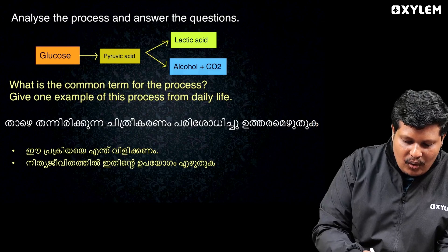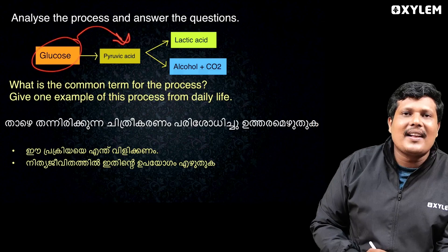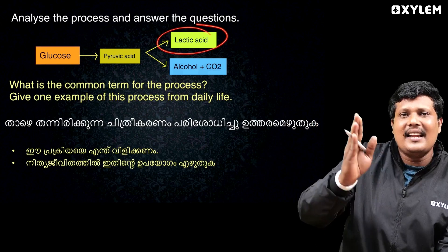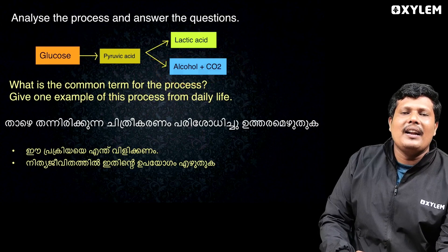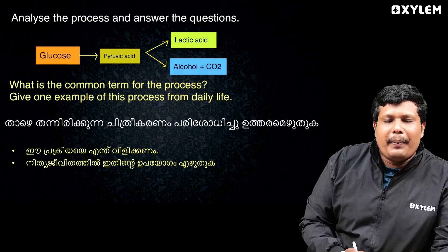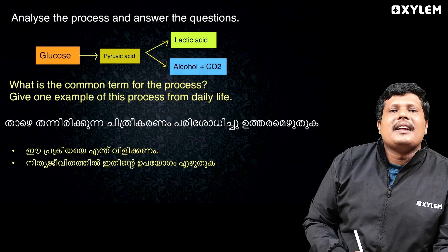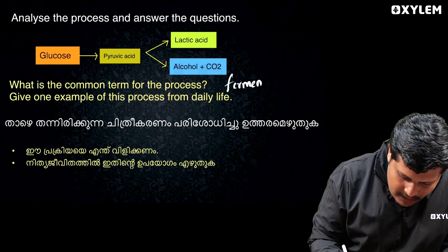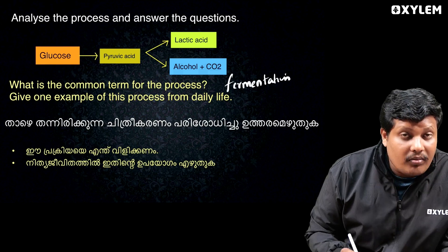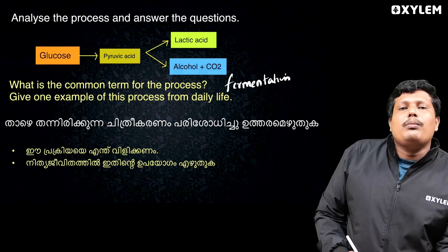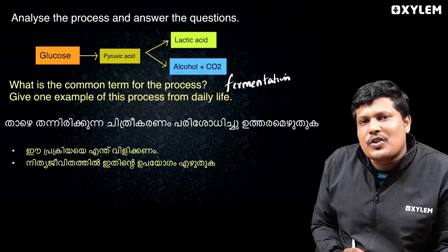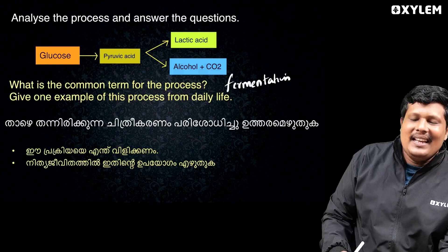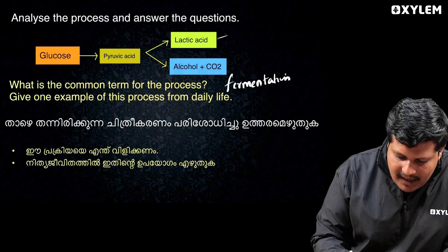Glucose is converted to pyruvic acid through the process of glycolysis. Pyruvic acid is the product of glycolysis.